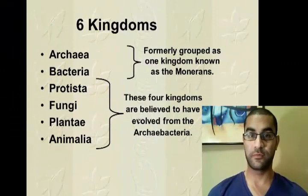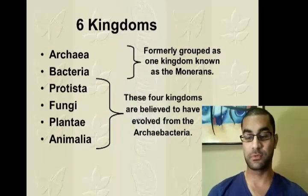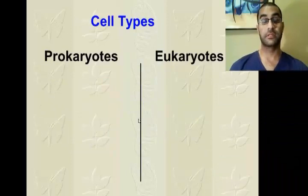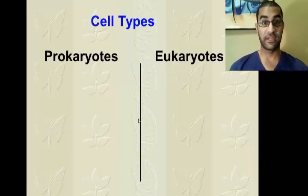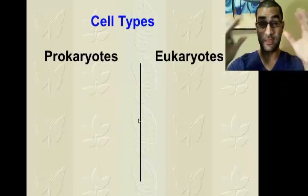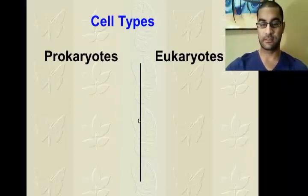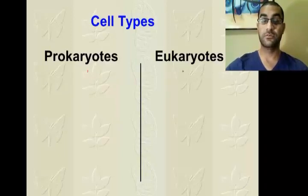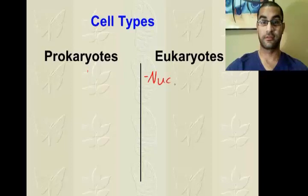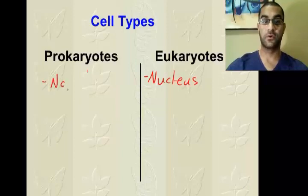Now we're going to see the difference between prokaryotes and eukaryotes. There are four key differences I want you to pick up on. Difference number one: whether or not they have a nucleus. Of the two, eukaryotic cells have a nucleus, and prokaryotic cells have no nucleus. That's the major difference between the two.